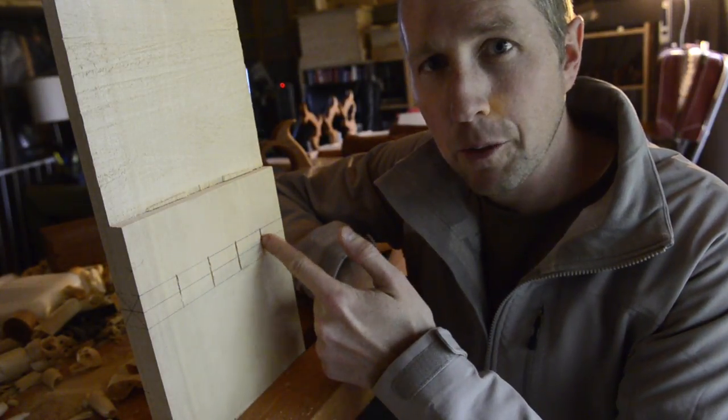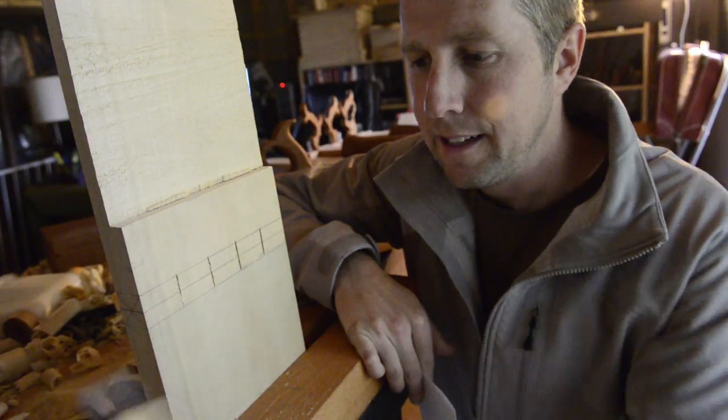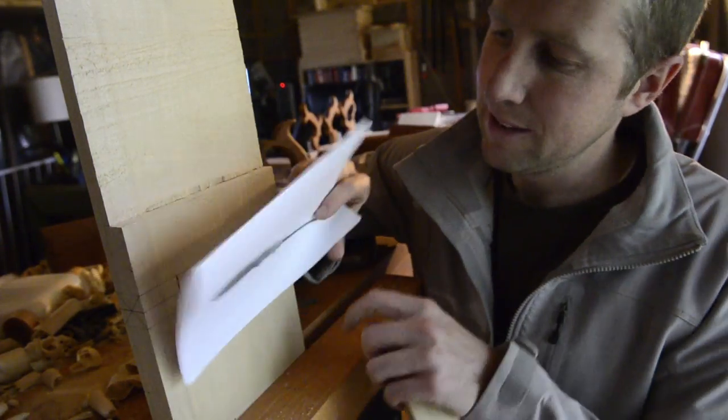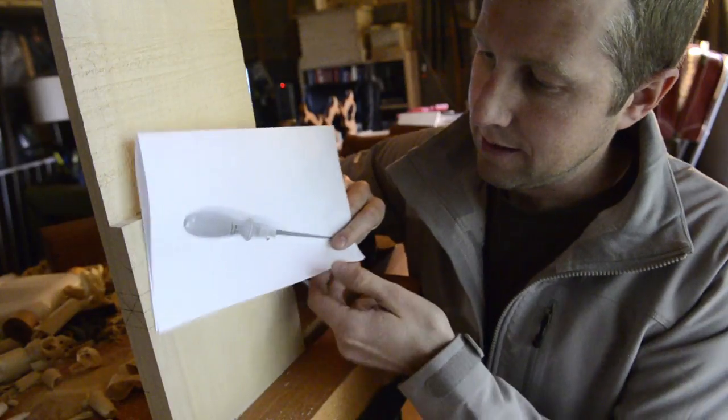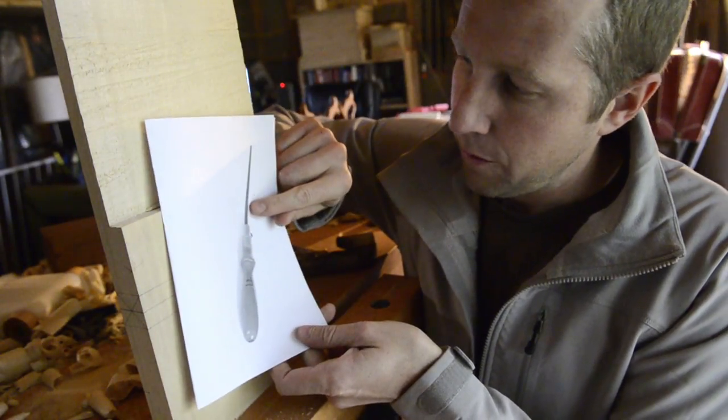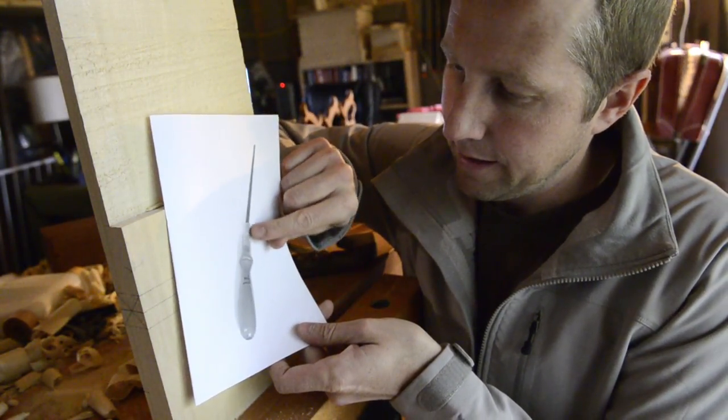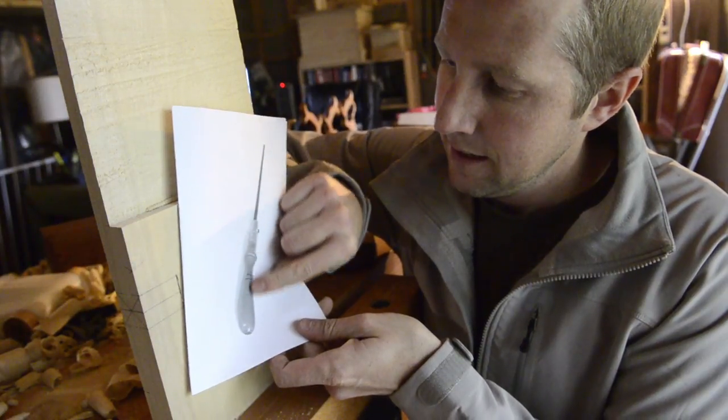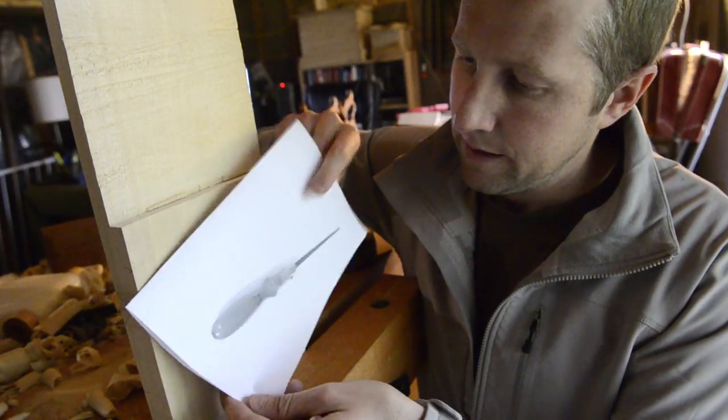He used something called a pad saw, but I didn't have one. A pad saw looks like this - you can see it fits a little thin blade in here and it tightens into a handle.